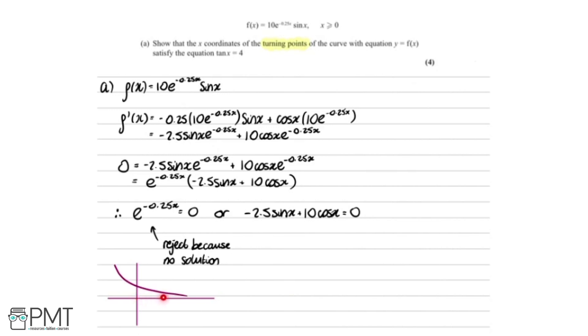And actually, y equals 0 acts as an asymptote here, and it never touches 0, so it can't equal 0, so there are no solutions. So we're going to work with this here.